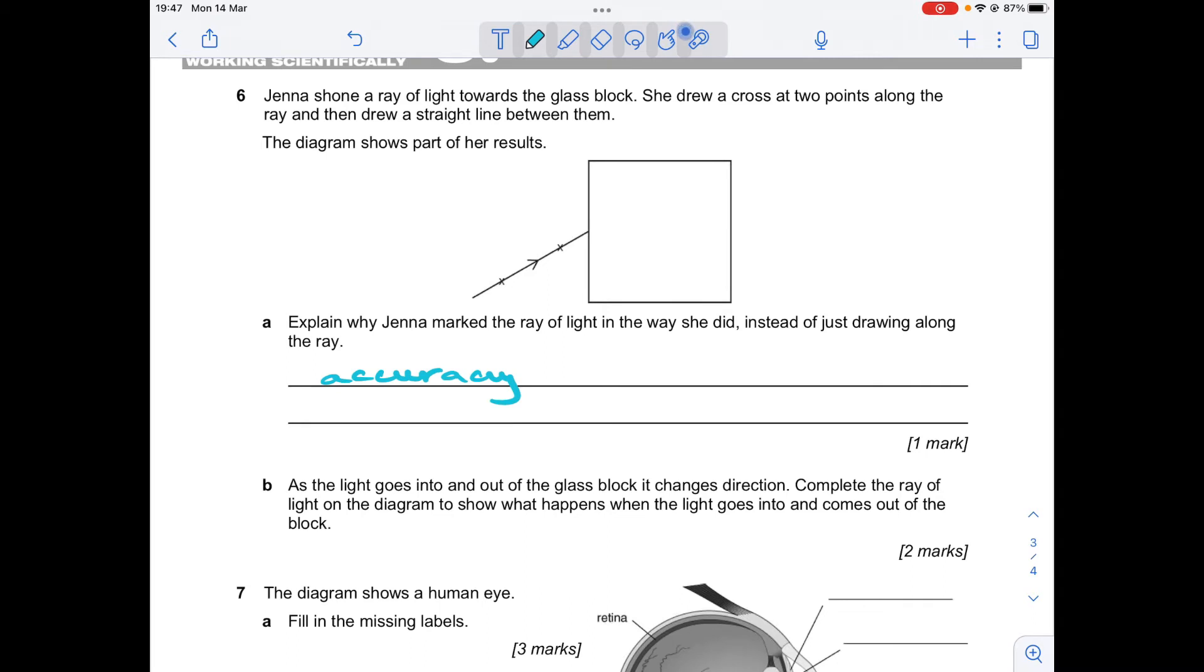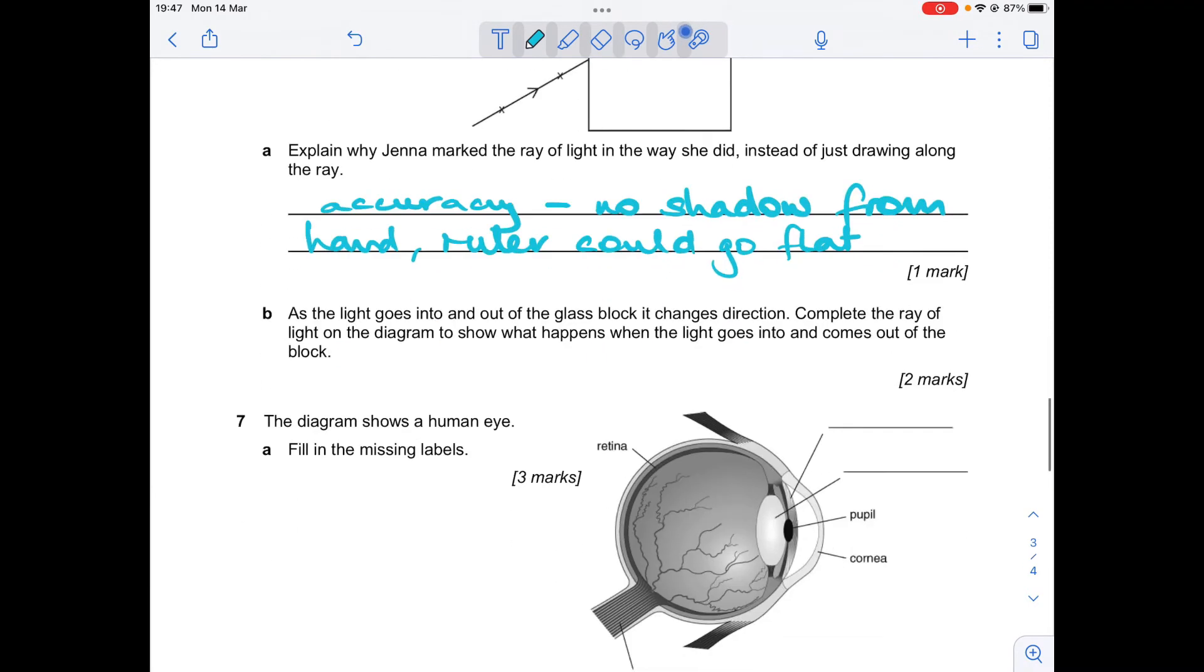It's more accurate because her hand would make a shadow as well if she tried to draw along the ray. She wouldn't be able to put a ruler along the ray because a glass block would be in the way. So we'll add a few of those notes. No shadow.